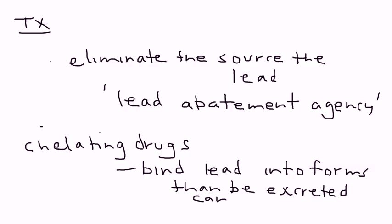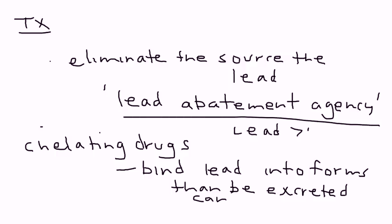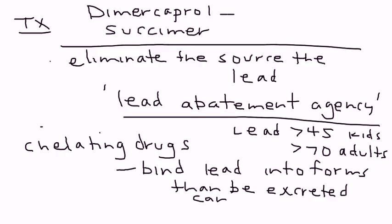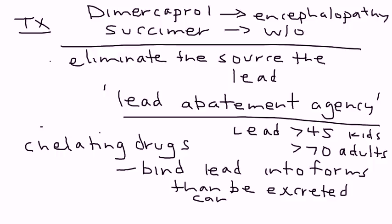These drugs are given when lead levels are very high — a lead level of greater than 45 in kids, and greater than 70 in adults. There are two main drugs: dimercaprol and succimer. Dimercaprol is usually used when the patient has some form of encephalopathy, which is very serious. If the patient does not have encephalopathy, then you can give succimer.